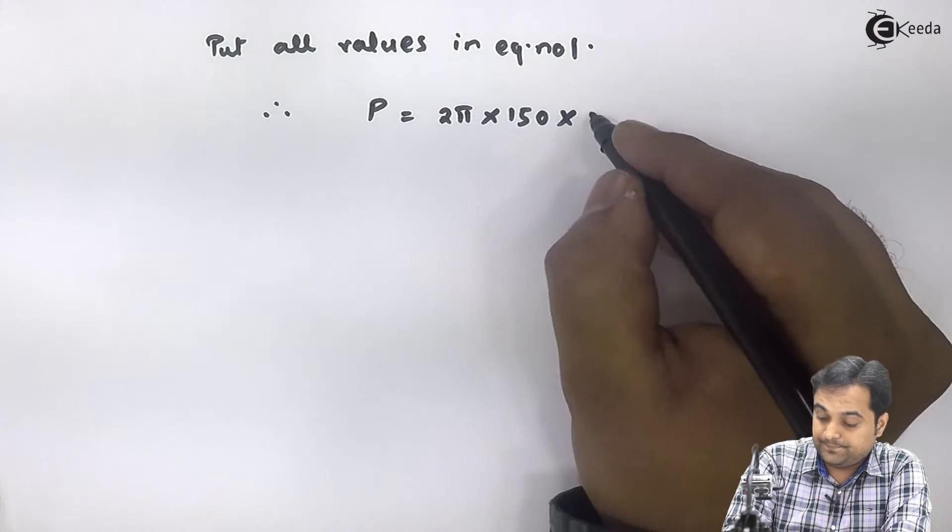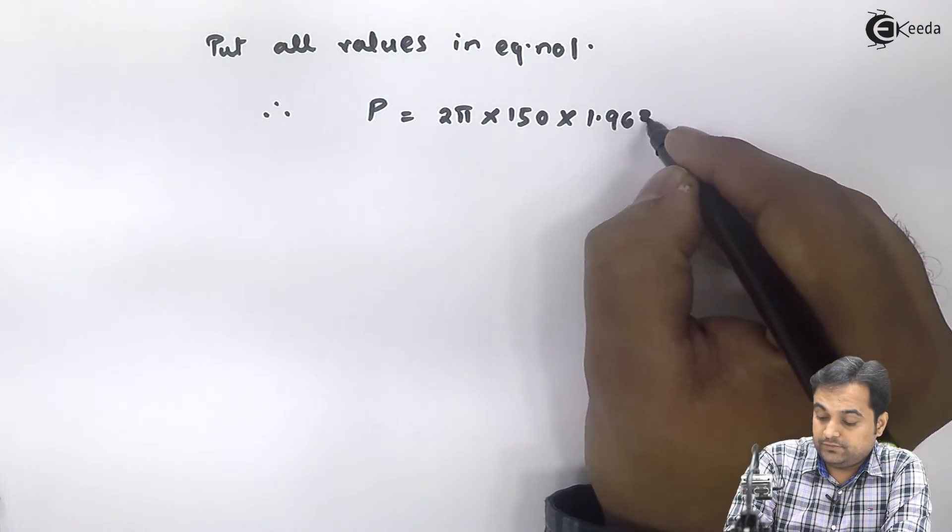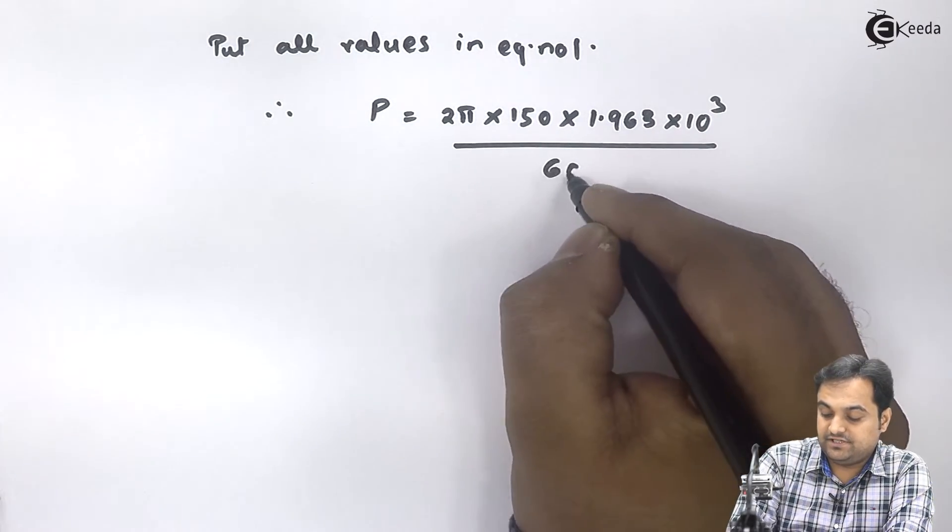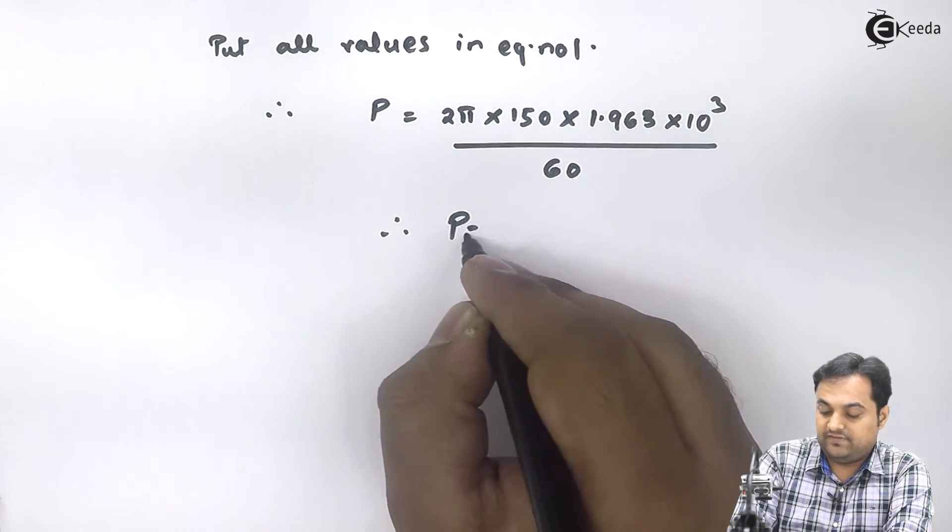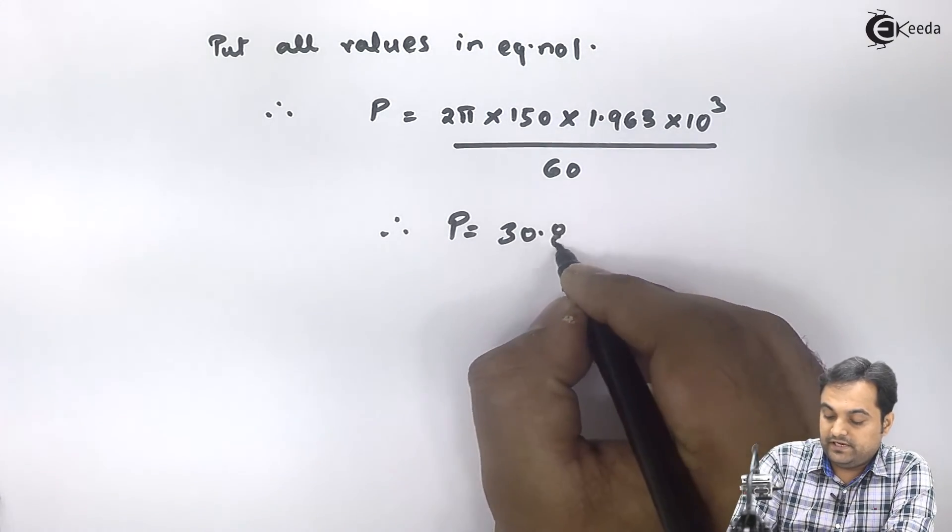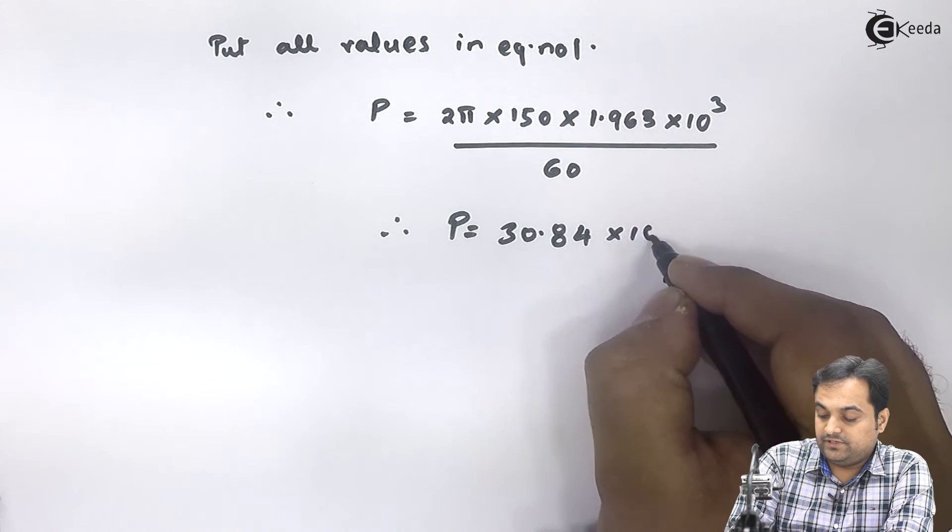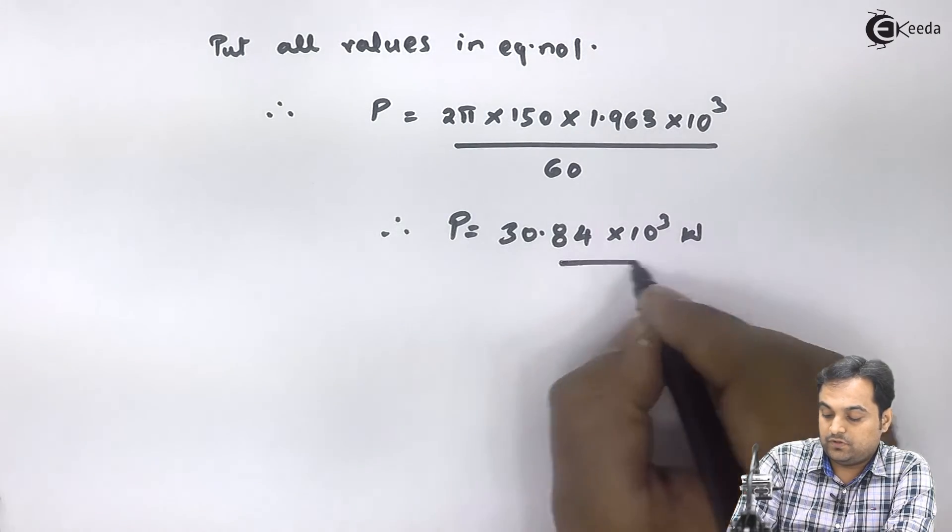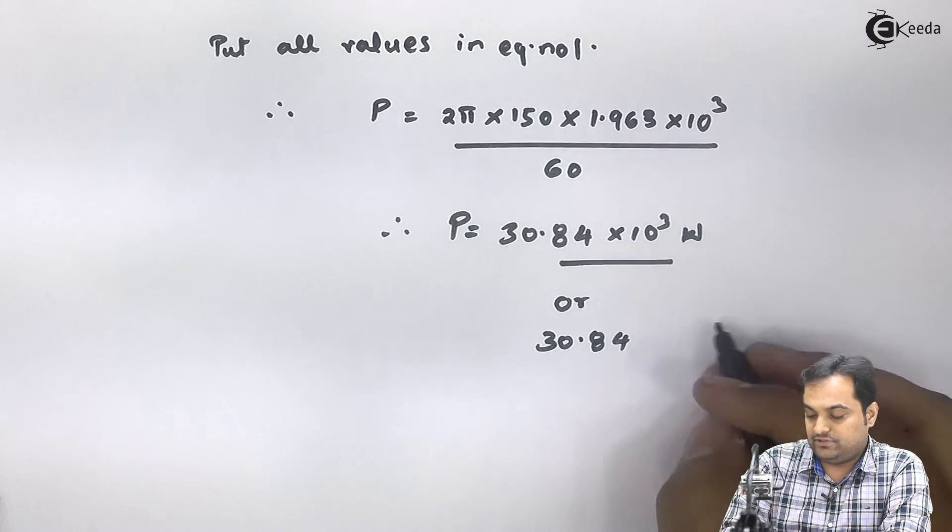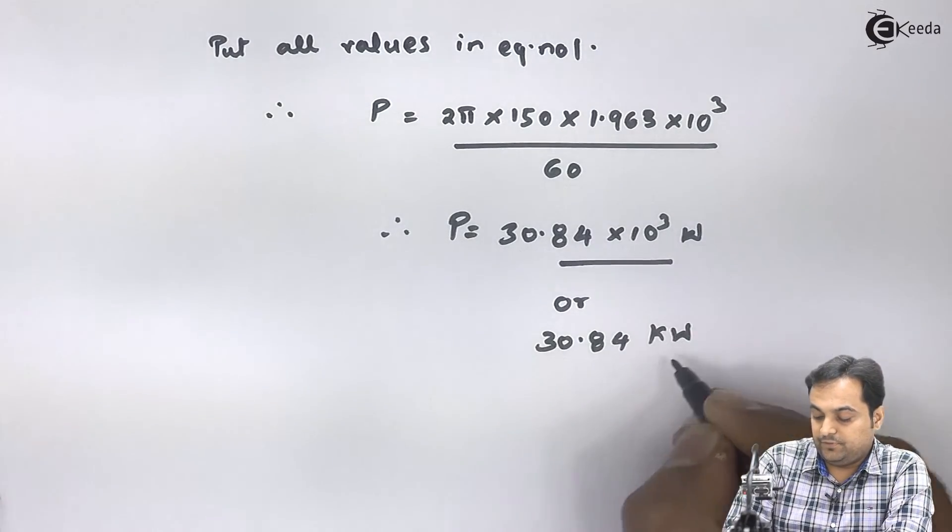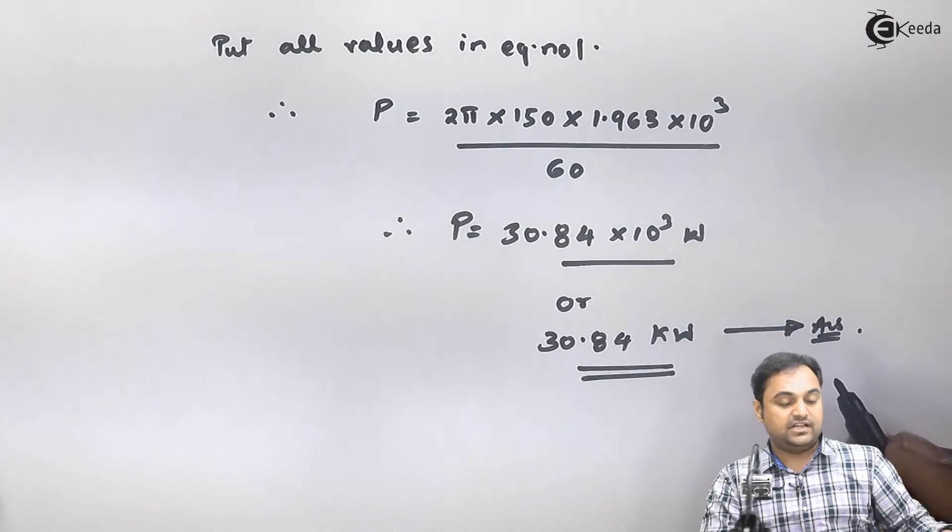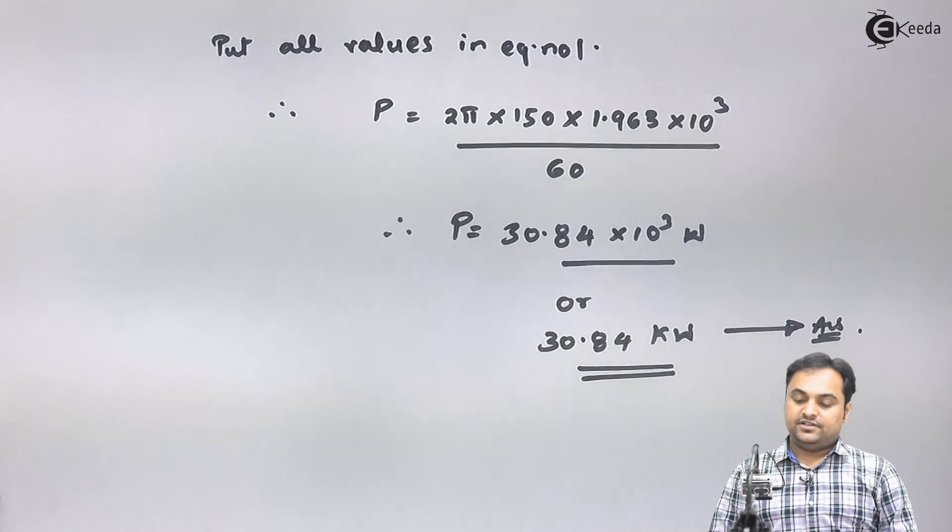This is 2π × 10³ × N × T divided by 60. From this I will be getting the answer of power as 30.84 × 10³ watts, or 30.84 kilowatts. Here I have found the value of power which was asked in the question, and with this we complete this question.